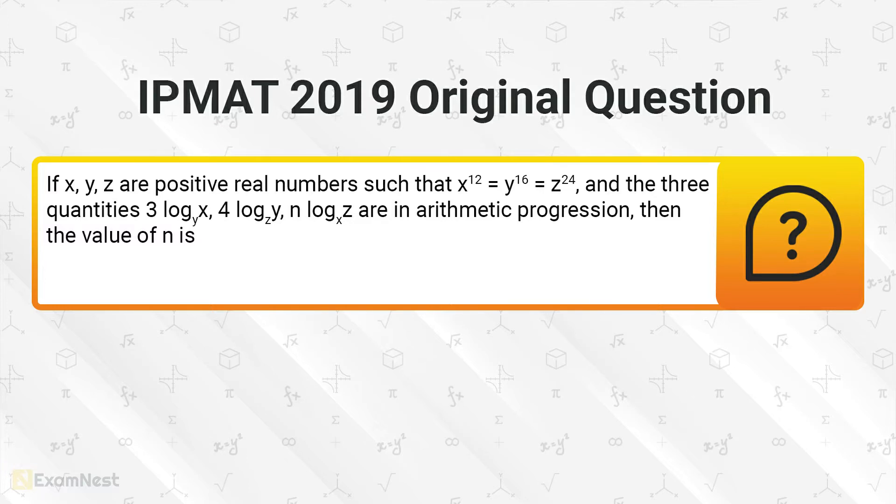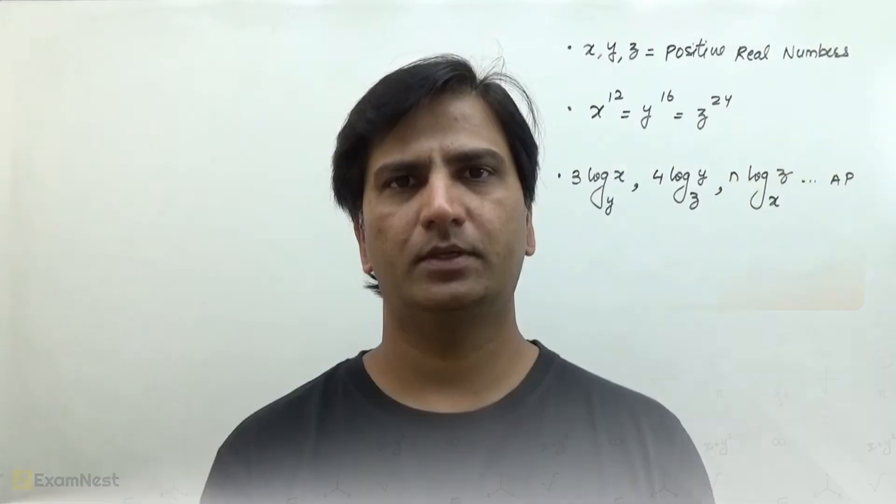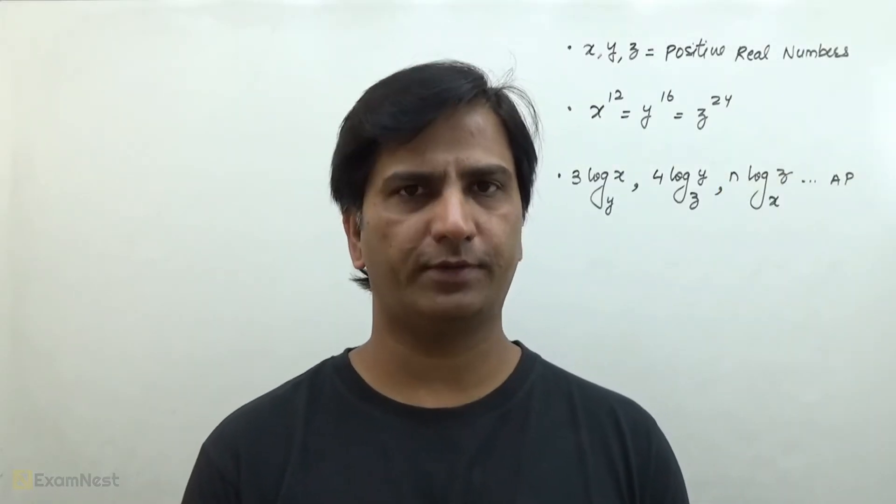and the three quantities: 3 log x to the base y, 4 times log y to the base z, and n times log z to the base x are in arithmetic progression, then the value of n is. This question is a moderate to tough level question.